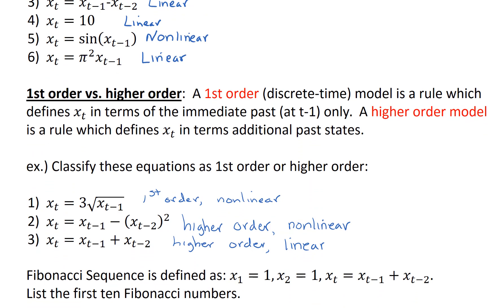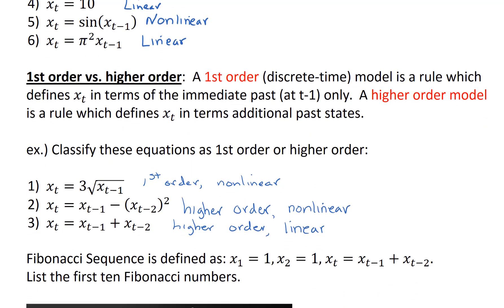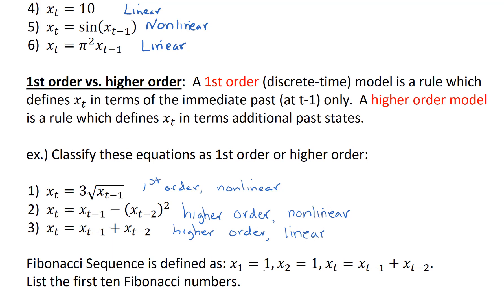So, the Fibonacci sequence is defined as x sub 1 equals 1, x sub 2 equals 1, and then x sub t is the sum of the two previous terms. Let's write out the first several terms of the Fibonacci sequence. Let's list the first ten Fibonacci numbers. x sub 1 is given, x sub 2 is given. x sub 3 is the sum of the two previous terms, so 1 plus 1 is 2.